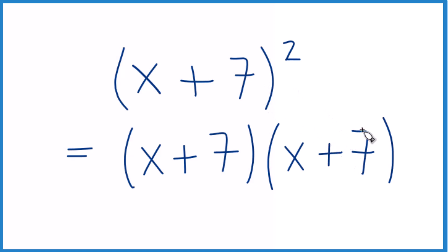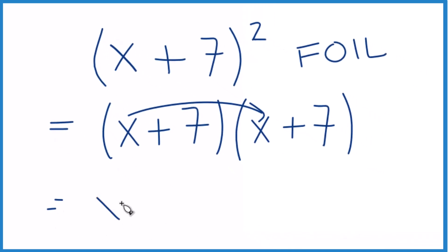Now we can use the distributive property to expand and simplify. We're going to multiply x times everything here, and then 7 times everything here. And you can use the FOIL method to help remember how to do that. So you take the first term, that's the x times x, that gives us x squared.